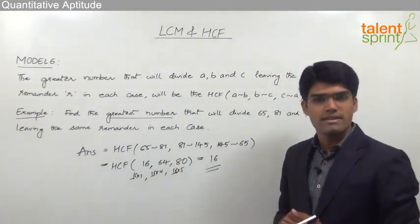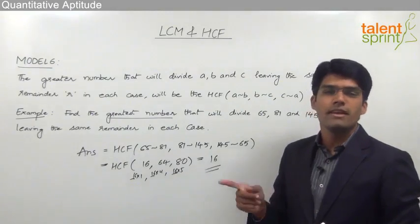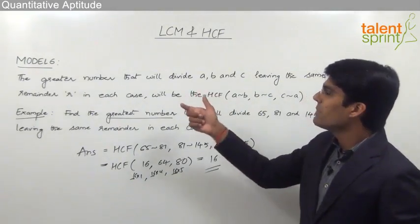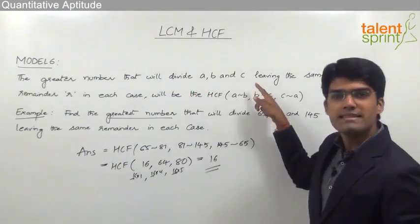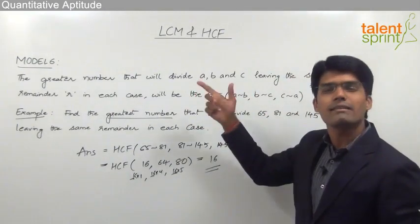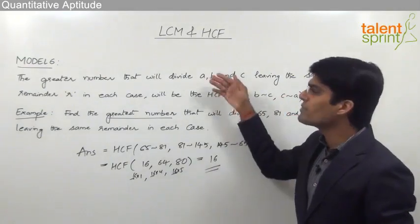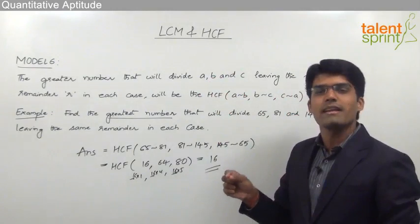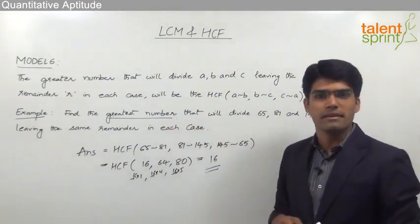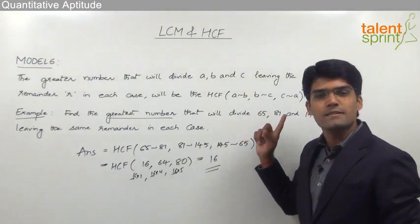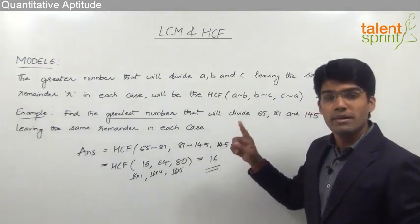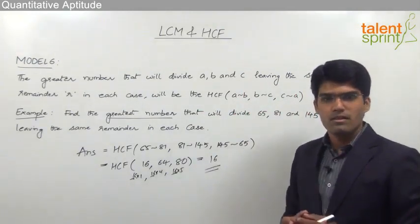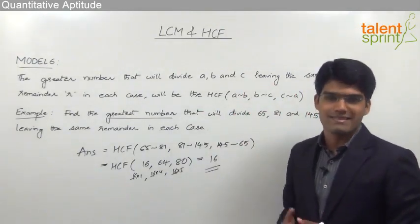Remember friends, we have discussed the similar concept in model number 3 where it was for LCM. There the point was the least number that is divisible by three numbers a, b, and c leaving the same remainder r in each case. So don't get confused in model 6 and model 3. Model 3 is for LCM where a number when divided by three different numbers gives the same remainder, and here model 6 is for HCF where a number which can divide three different numbers and leave the same remainder. So be careful and get the required answer as per the models discussed.